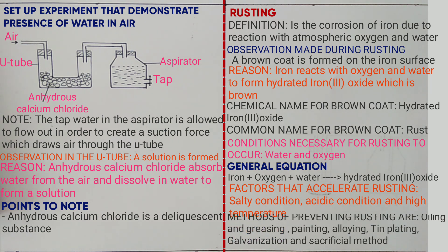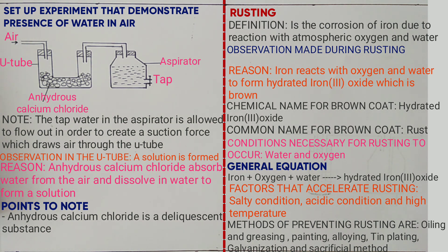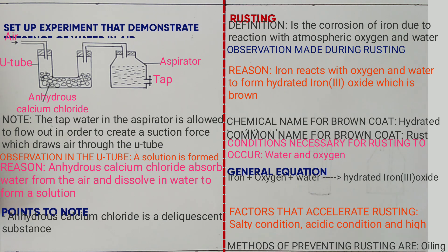Methods of preventing rusting are: oiling and greasing, painting, alloying, tin plating, galvanization, and sacrificial methods. The sacrificial method is an arrangement in which a more reactive element, such as magnesium or zinc, is attached to the iron surface so that the more reactive element corrodes instead of iron. Oiling and greasing is usually applied to moving parts.